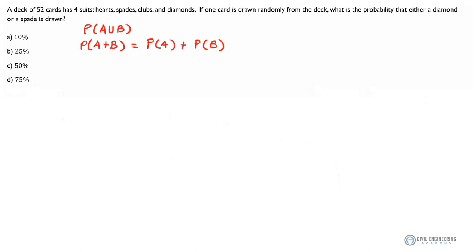It equals the probability that A happens plus the probability that B happens, and then we subtract...